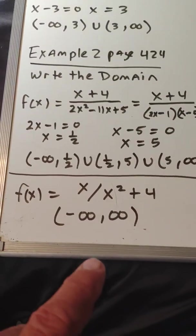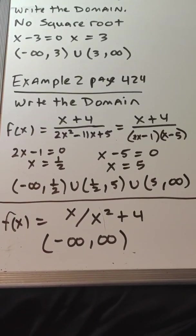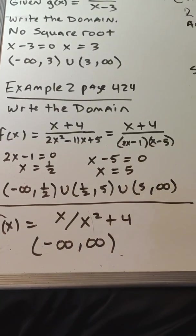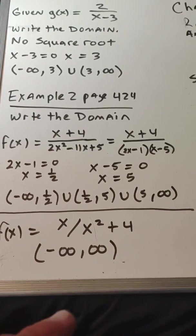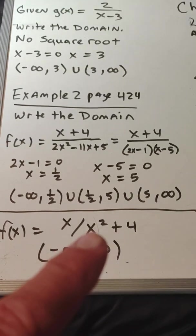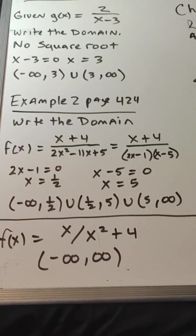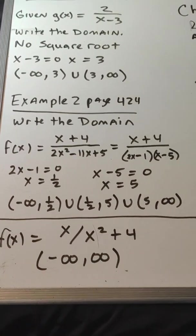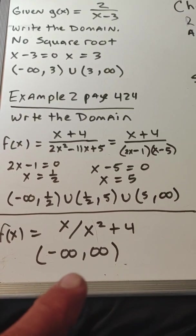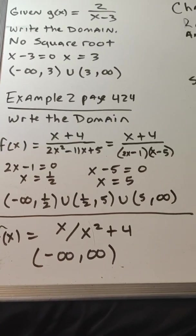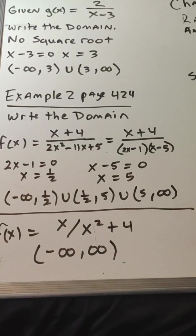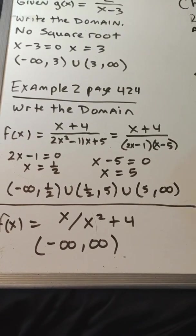The second part of example 2 is x / (x² + 4). Do we have a square root? No. Do we have a factorable expression? No — x² + 4 cannot be factored. No matter what we put in for x, x² is positive, and adding 4 keeps the whole denominator positive. So the domain is all real numbers, from negative infinity to infinity. Note: if it were a minus sign, it would be a difference of squares and could be factored. There's no such thing as a sum of squares.